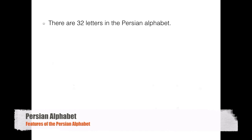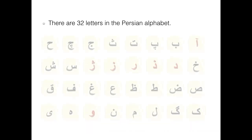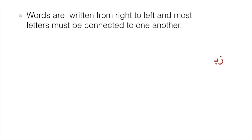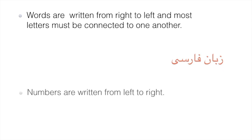There are 32 letters in the Persian alphabet. Words are written from right to left, and most letters must be connected to one another. Numbers are written from left to right.